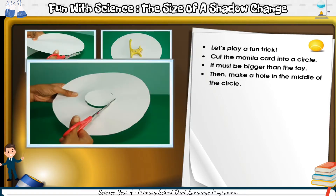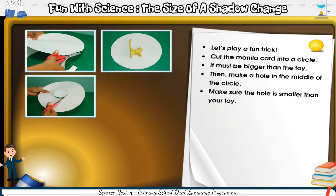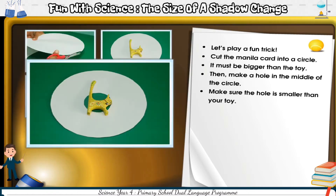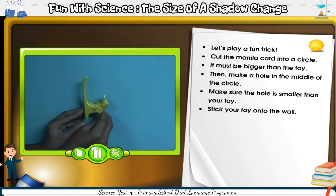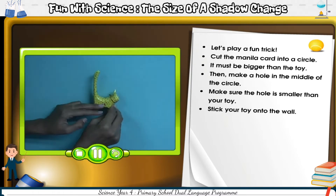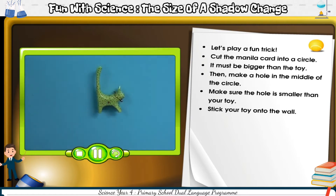The circle must be bigger than the toy. Then make a hole in the middle of the circle. Make sure the hole is smaller than your toy. Stick your toy onto the wall.